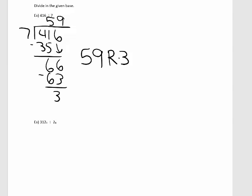Now let's do this same division in other bases. Let's take a look at 312 base 4, divided by 2 base 4. First I want to write it out in long division. Because we're in base 4, the numbers in base 4 are 0 through 3. I want to take the multiples that are in this base with 2.